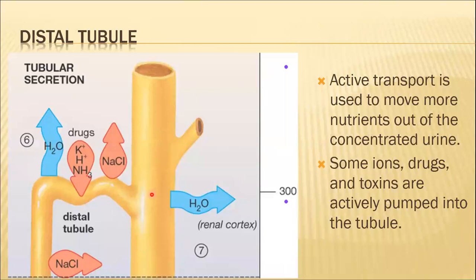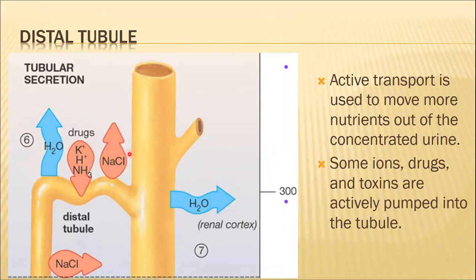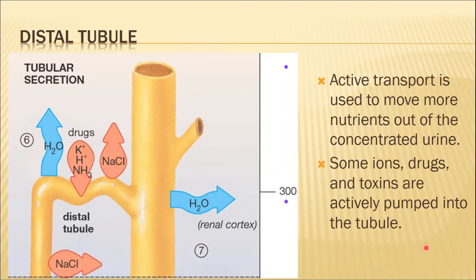Then we come to the distal convoluted tubule. There is more active transport of nutrients in this area. Sodium chloride is actively transported out of the urine here. There is also active secretion here, basically for acid-base balance and maintaining pH in the body. Drugs and toxins are also added to the urine in this area.